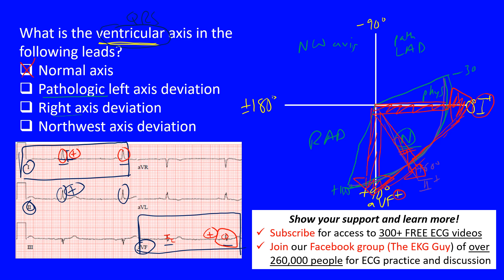What we have here is a normal ventricular axis based on those findings. The question is, what is the ventricular axis in these following limb leads? That's a normal ventricular axis. That's the end of this lecture; I hope you learned something.